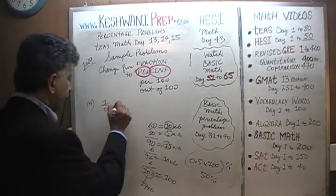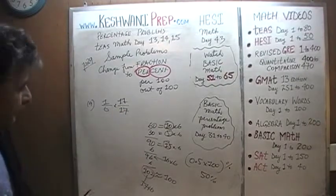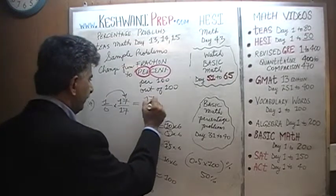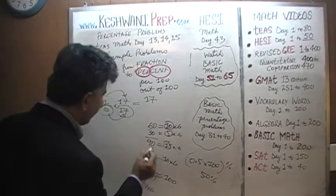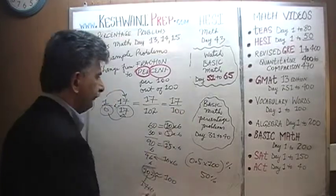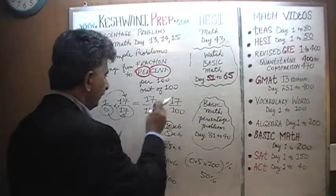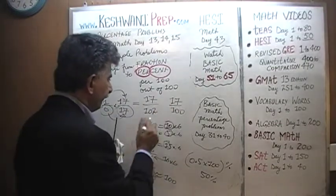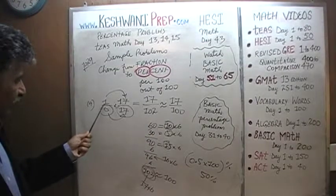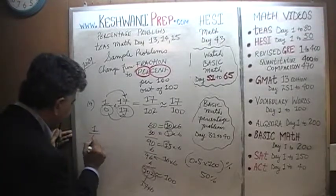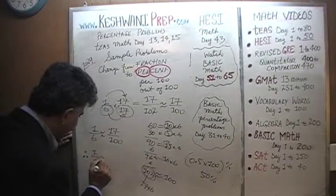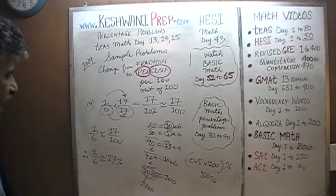Let's multiply top and bottom by seventeen. On the top we get one times seventeen, which is seventeen. On the bottom we get six times seventeen, which is one hundred and two. We're going to claim that is approximately equal to seventeen over one hundred. Therefore, one-sixth is approximately seventeen over one hundred, which means one-sixth is approximately seventeen percent.